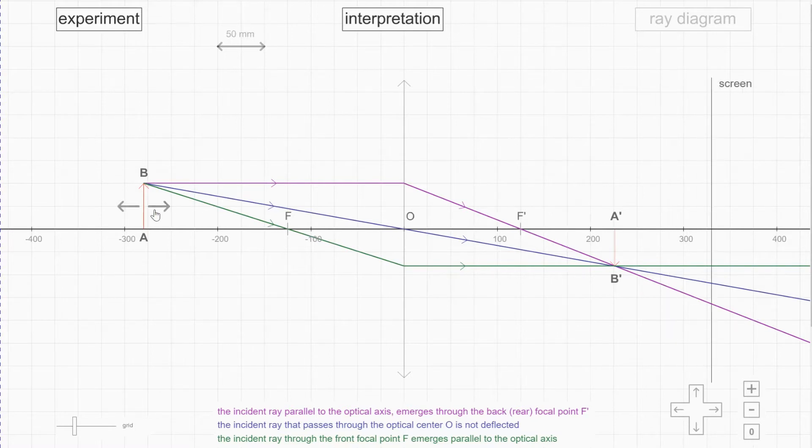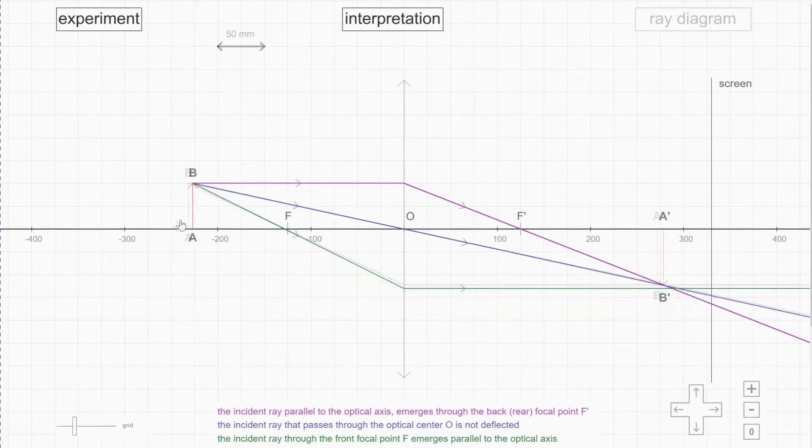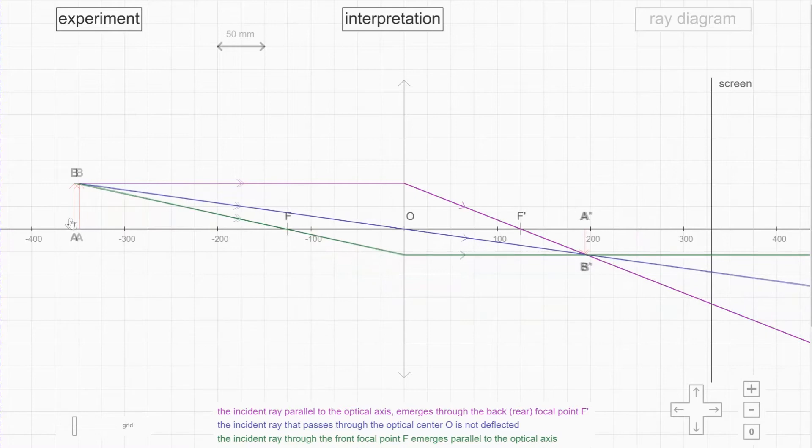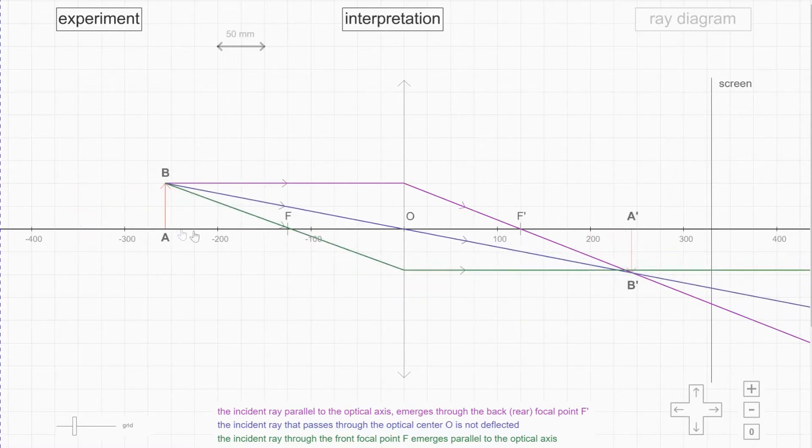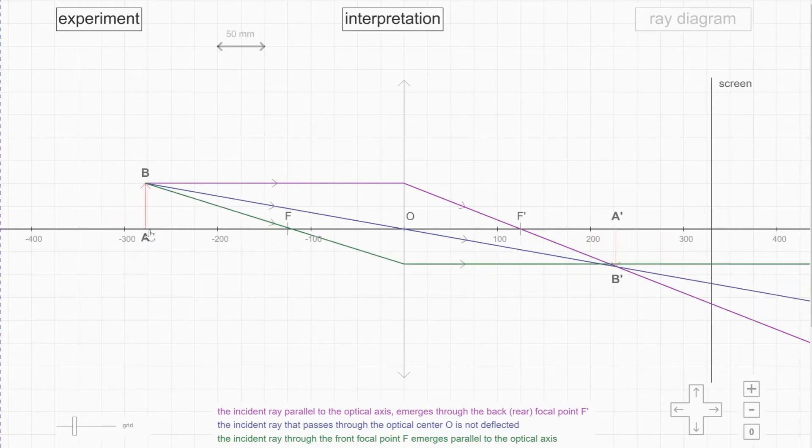Now you might be wondering, what if I shift the position of the object? So let me show you, as long as more than F, as you shift the three ways, the rules will still apply. So it doesn't matter where is the position of the object. But how about if the object is less than one focal length, as you can see here?